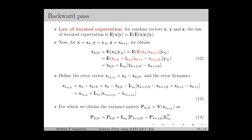Next, we compute x̂k|n using the law of iterated expectation, also known as the tower property. For random vectors x, y, and z, this law gives E[x|y] = E[E[x|z]|y]. Substituting x = xk, y = Yn, and z = xk+1, we obtain x̂k|n = E[xk|Yn] = E[E[xk|xk+1]|Yn]. Using the previous equations, E[xk|xk+1] = x̂k|k + Lsk·(xk+1 − x̂k+1|k), which gives x̂k|n = x̂k|k + Lsk·(x̂k+1|n − x̂k+1|k).